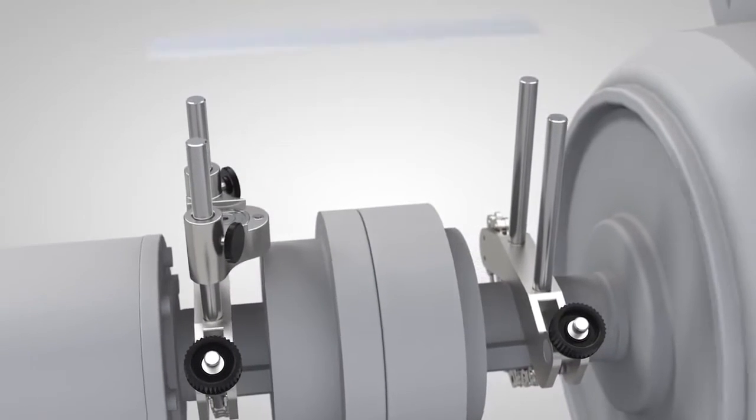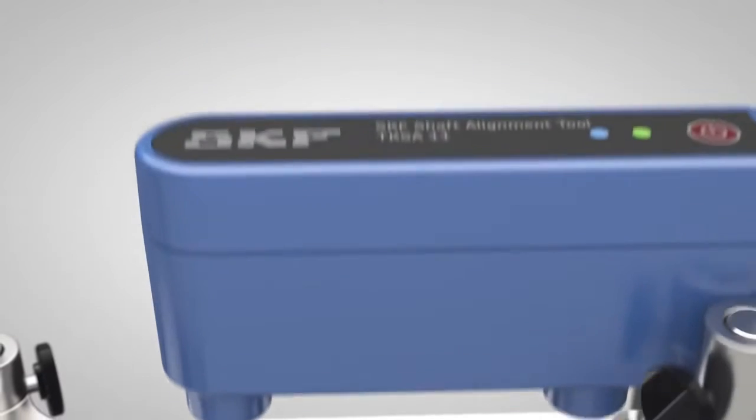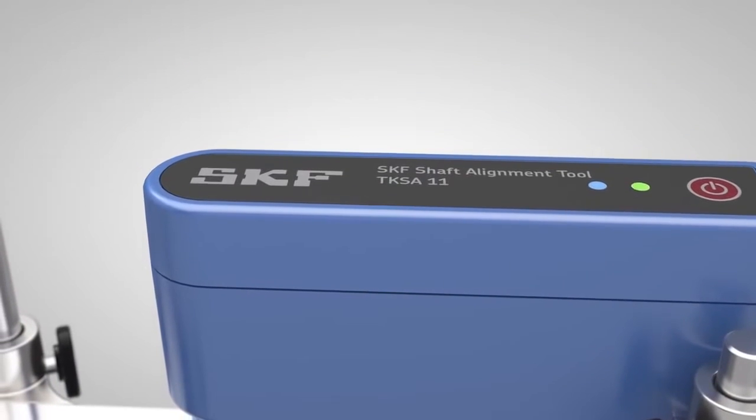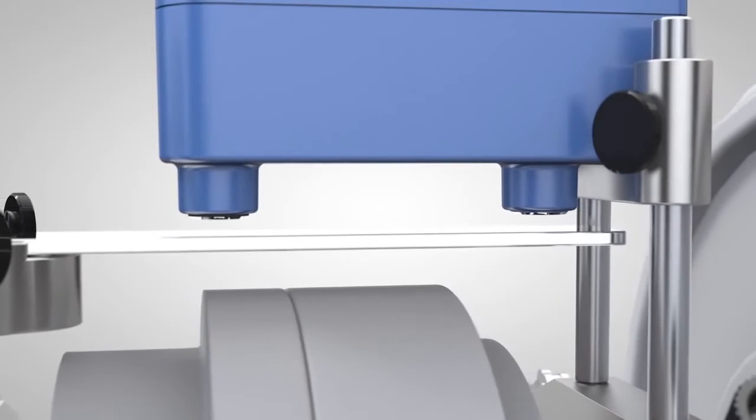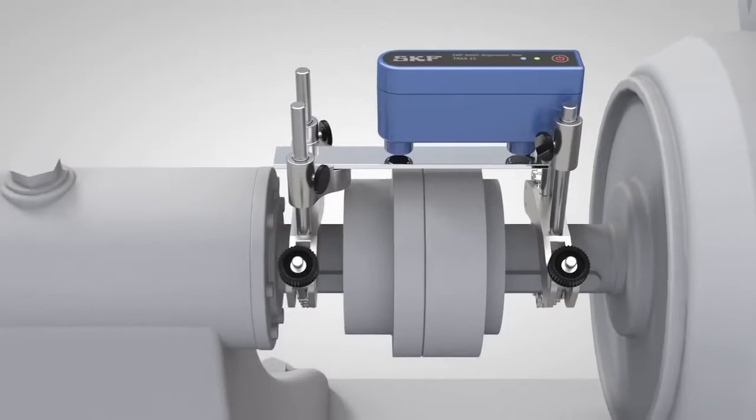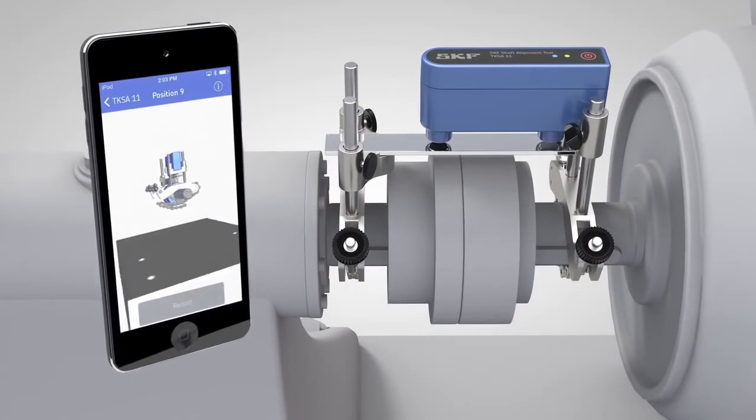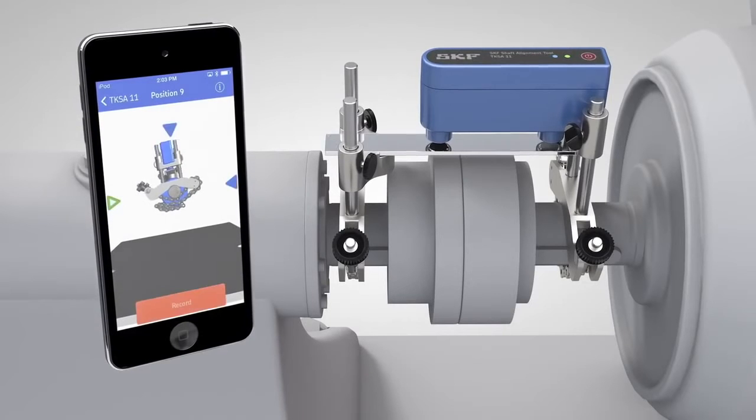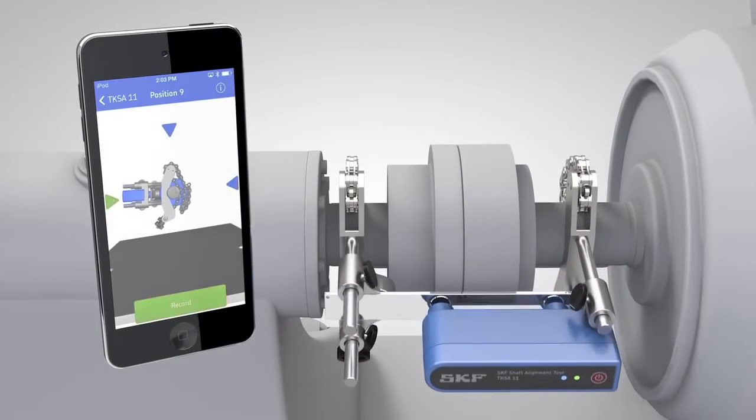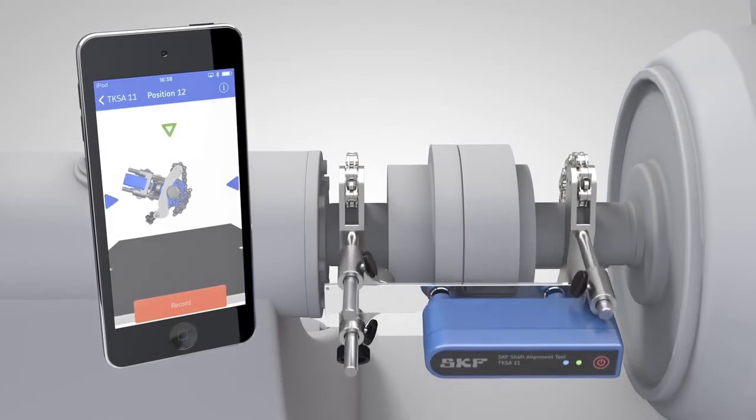SKF is proud to present the SKF Shaft Alignment Tool TKSA 11. By using innovative inductive proximity sensors and an intuitive app for mobile devices, the TKSA 11 is a very easy-to-use instrument that facilitates accurate shaft alignment.